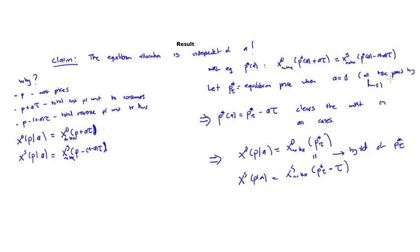These have to be equal by the definition of P star of tau. When all of the tax is paid by firms, this is the demand, this is the supply, and in equilibrium these are equal. The market clears for every case, and it's independent of A.